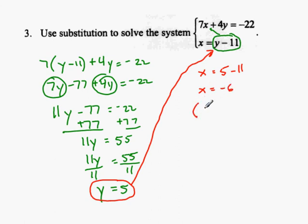So these two lines are intersecting at the point negative 6 comma 5. That's my answer.